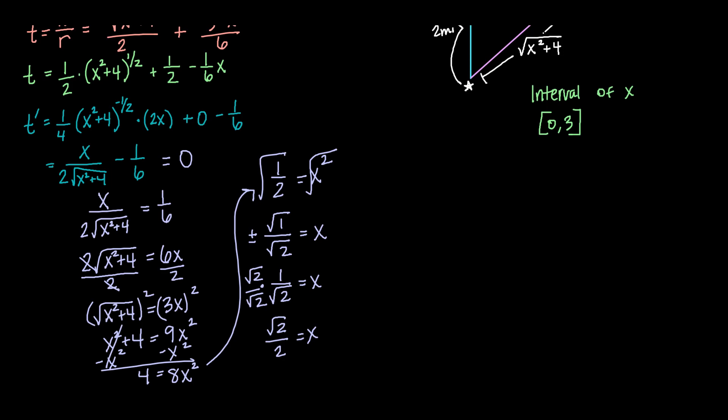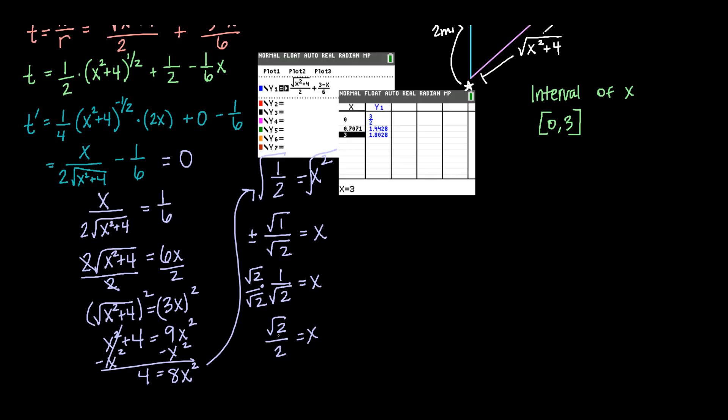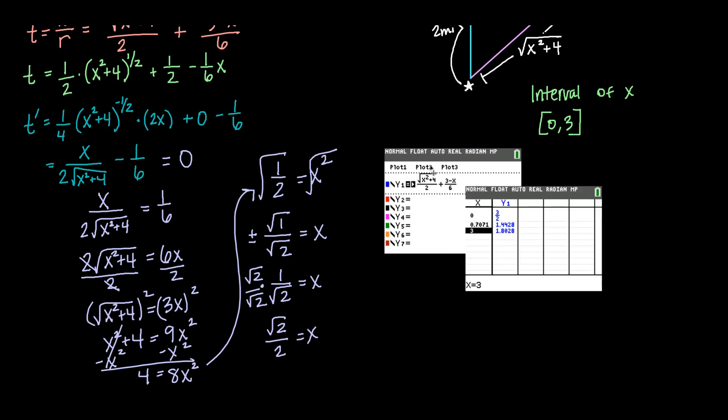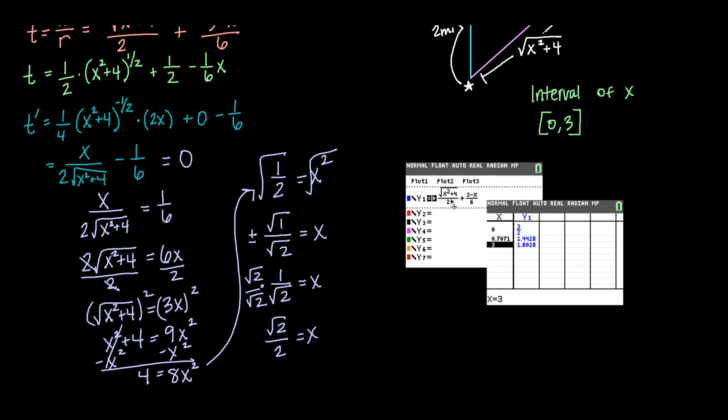All right, so square root of two over two obviously isn't something that is going to be super easily plugged back into time. So sometimes with these optimization problems, we're going to utilize our calculator to evaluate at our end points and at our critical point. So I've gone ahead and done that for us here. So I've taken in just a TI-84 calculator, I've plugged our time equation into our y equals, and then I've gone into the table function and I've evaluated that time function at each one of our end points and our critical point.